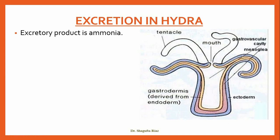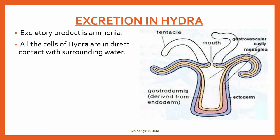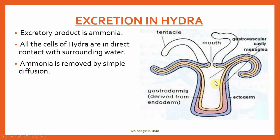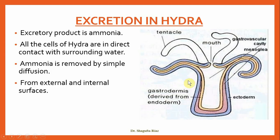The excretory product in hydra is ammonia. As mentioned, all the cells of hydra are in direct contact with the surrounding water. Ammonia can be removed by simple diffusion because water is present both inside and outside, so diffusion removes the ammonia from the body into the water from both the external and internal surfaces.